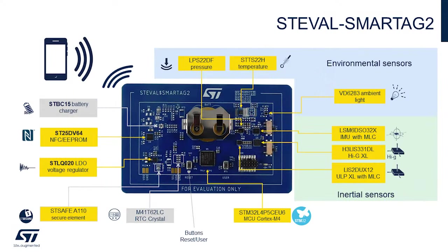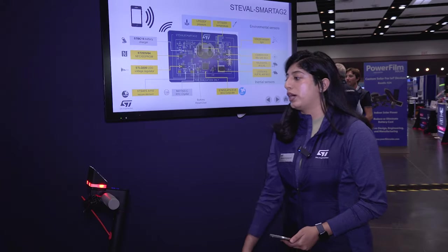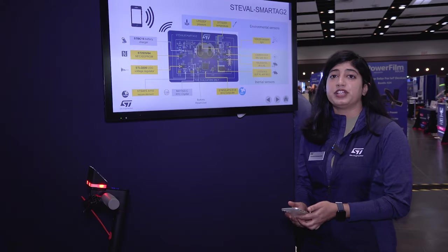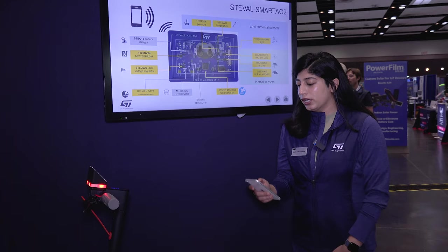There are two three-axis accelerometers: one high-G accelerometer to detect and record the impact of movements, and one ultra-low-power accelerometer, the LIS2DUXS12. We will be using the second accelerometer to identify different states of the scooter.